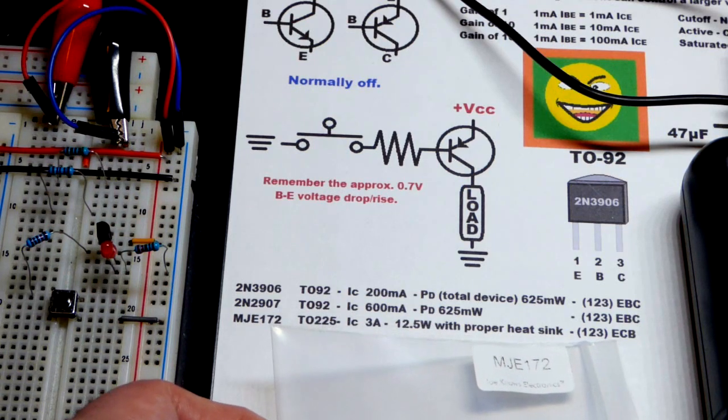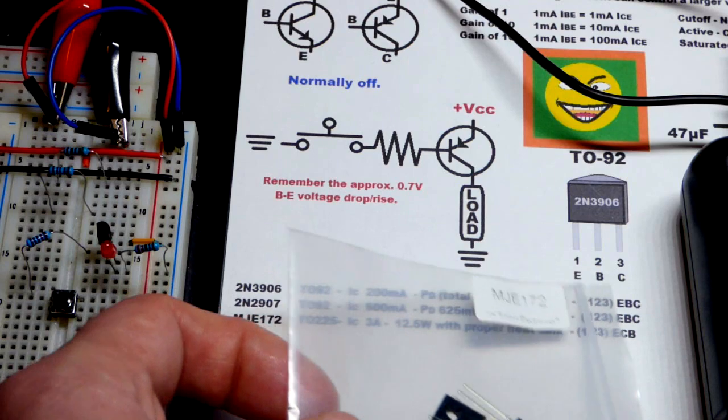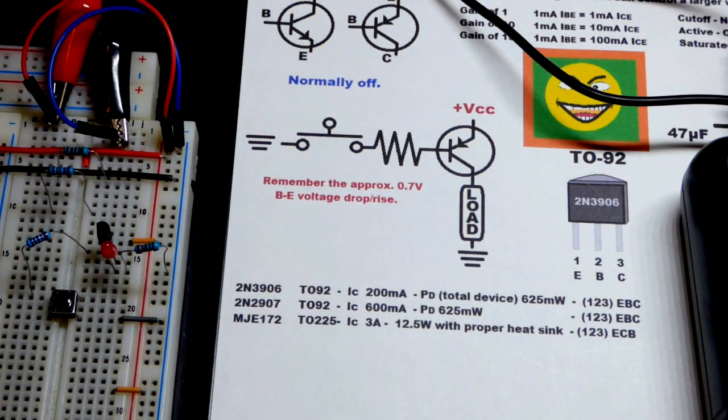According to the data sheet, again, emitter is the left pin. But then the collector and base switch spots. Collector 2, base 3, right there.